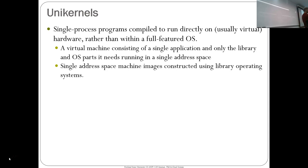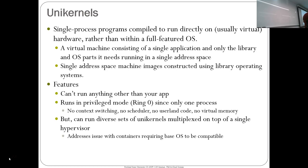With a unikernel, you look at your app, look at the OS code it needs, and strip out everything else. Only the code actually required is included. The benefit: everything can run in privileged mode because you're the only thing running. You don't need context switching, you don't need a scheduler, you don't need user land code, you don't need virtual memory — you own everything on that system. This also allows you to run many unikernels multiplexed on a single piece of hardware.